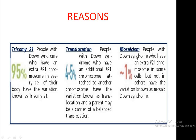But in the case of Mosaicism, only some cells carry Trisomy 21, not all cells. It is a rare type of phenomenon — almost 1% of people show this type of mosaic Down syndrome.